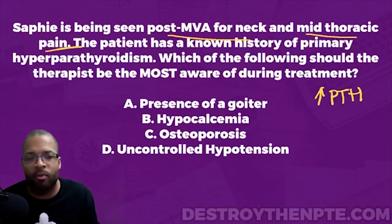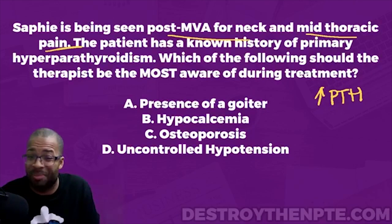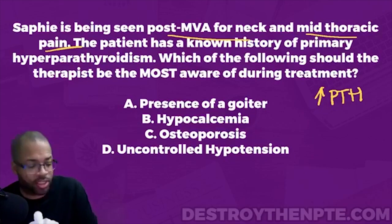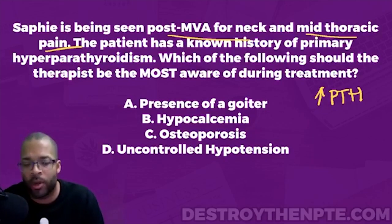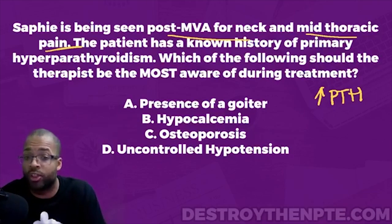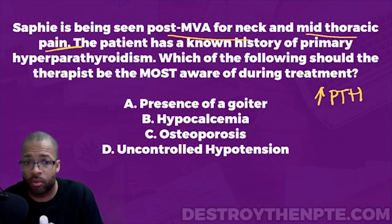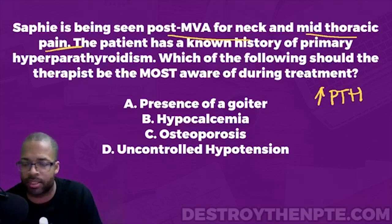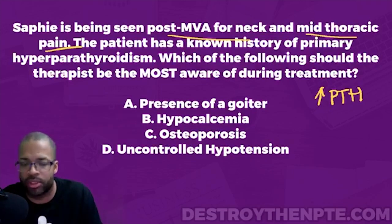The parathyroid is responsible for increasing the amount of calcium in the blood. So if we have hyperparathyroidism, that is going to increase calcium in the blood - also called hypercalcemia. Now let's look at the answer choices: A is presence of a goiter, B is hypocalcemia, C is osteoporosis, D is uncontrolled hypotension. Which should the therapist be most aware of during treatment?